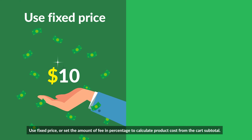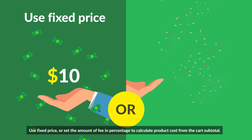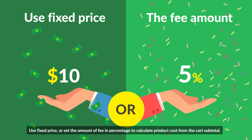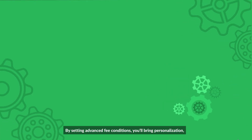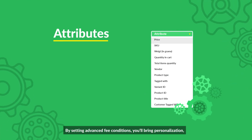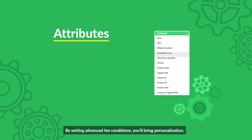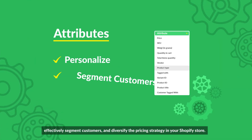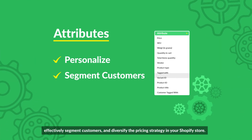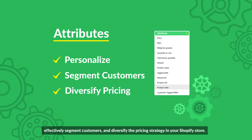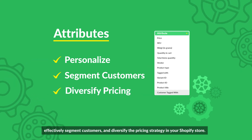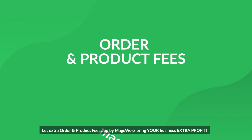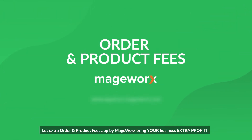Use fixed price or set the amount of fee in percentage to calculate product cost from the cart subtotal. By setting advanced fee conditions, you'll bring personalization, effectively segment customers, and diversify the pricing strategy in your Shopify store. Let Extra Order and Product Fees App by Madworks bring your business extra profit.